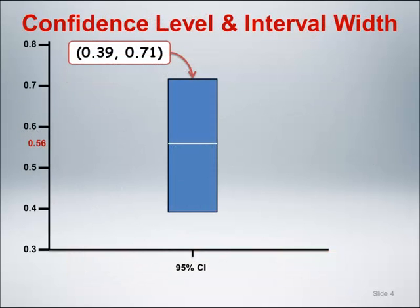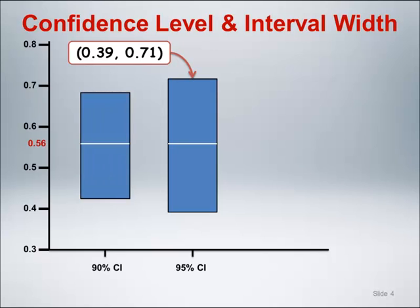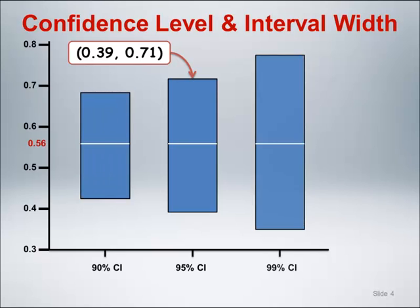There is nothing special about using a 95% confidence level. Here are the 90% and 99% confidence intervals for the survival proportion at 24 weeks gestation. To increase the confidence and be more certain that the interval contains the population proportion, the interval must be made wider. If we can tolerate lower confidence that the interval contains the parameter, the interval becomes more narrow.